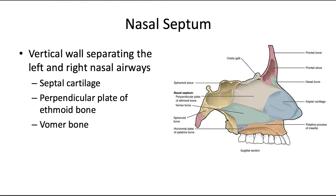The nasal septum is the vertical wall separating the left and right nasal airways. If someone has a deviated septum, it means this wall is displaced to one side or the other. It is composed of three parts: the septal cartilage out in front, the perpendicular plate of the ethmoid bone, and the vomer bone — another really great high-yield fact that could easily come up on exam day.